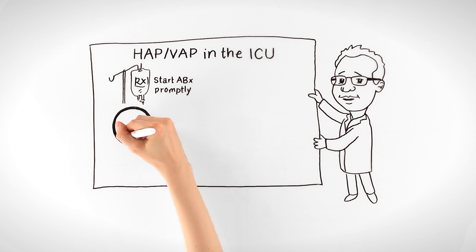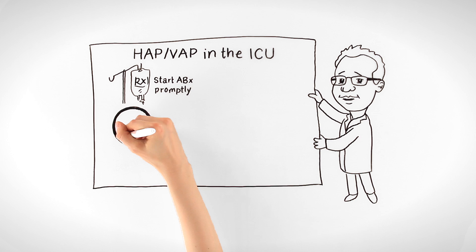Key messages: Start antibiotics promptly. Target core bugs. Consider patient risk factors. Combination therapy should be tailored once culture results are available. And treat most patients for seven days.